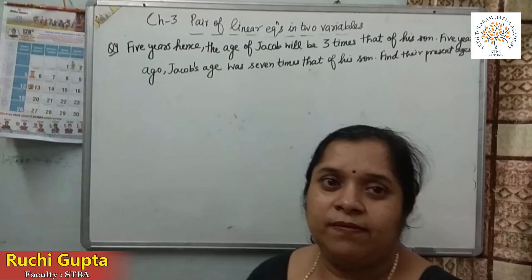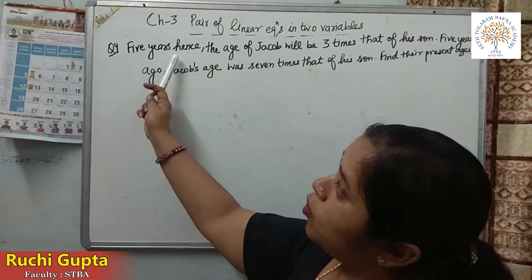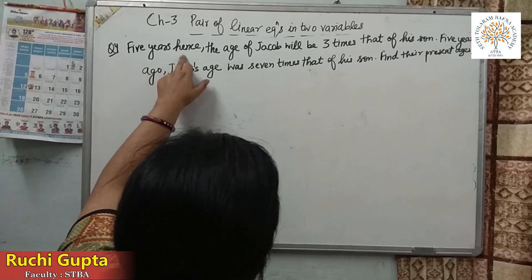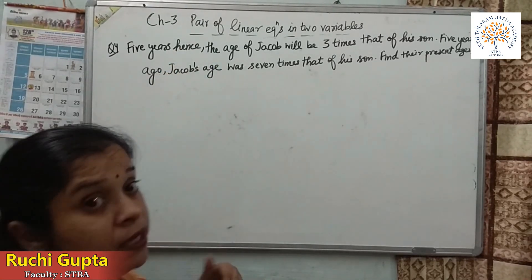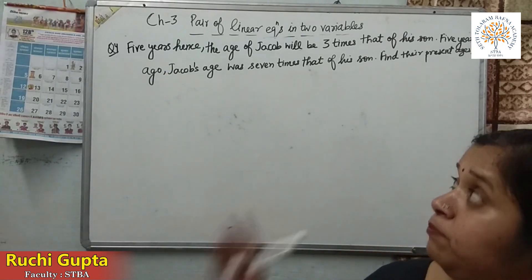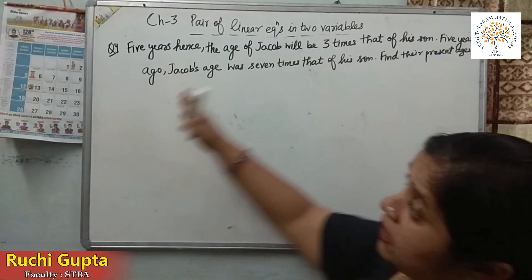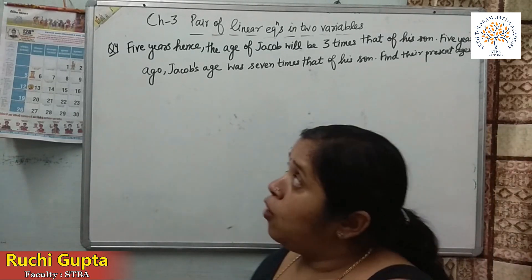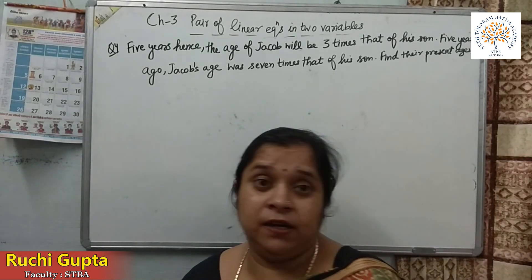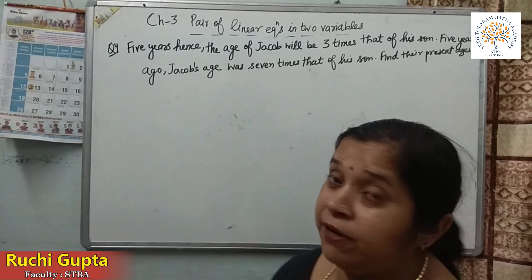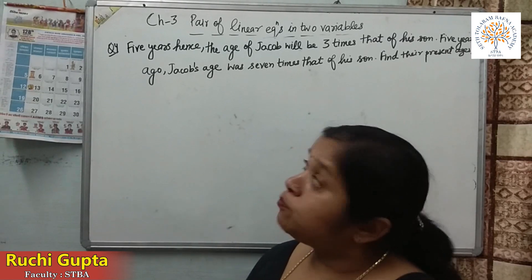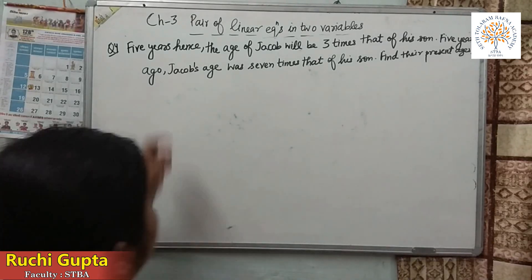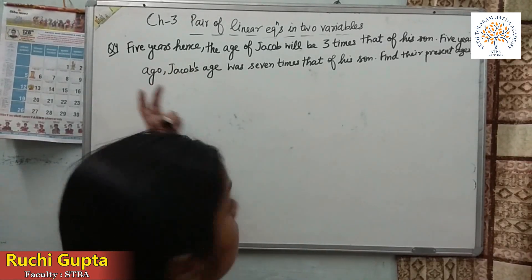My next word problem is about age. These types are also very important. You need to know: 'hence' means after, and 'ago' means before. So 'after 5 years' means we add 5 to the present age, and '5 years ago' means we subtract 5. For example, if my age now is 30, then after 5 years it will be 35, and 5 years ago it was 25.